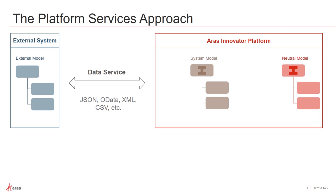For instance, maybe you need to bring in data from an external system and get it into two different item types in Innovator. The system model allows you to define what that external model looks like once and then use it with multiple neutral models in ARIS. It also allows you to share that model with different organizations.